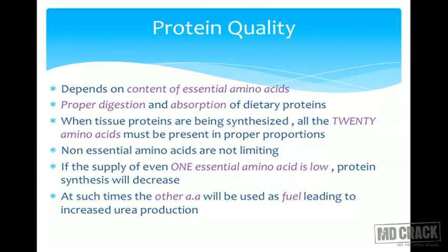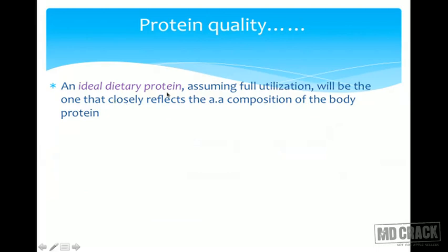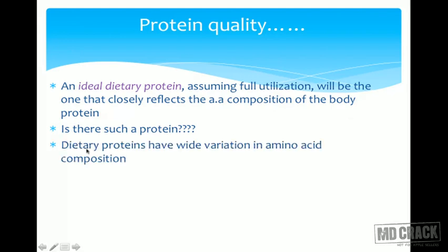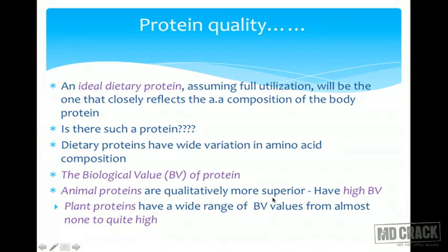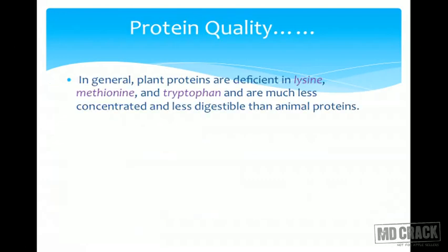An ideal dietary protein — assuming full utilization — would closely reflect the amino acid composition of body protein. Dietary proteins have wide variation in amino acid composition. Animal proteins are qualitatively more superior and have high biological value (BV). Plant proteins have a wide range of BV — from almost zero to very high — but animal proteins are generally more superior.